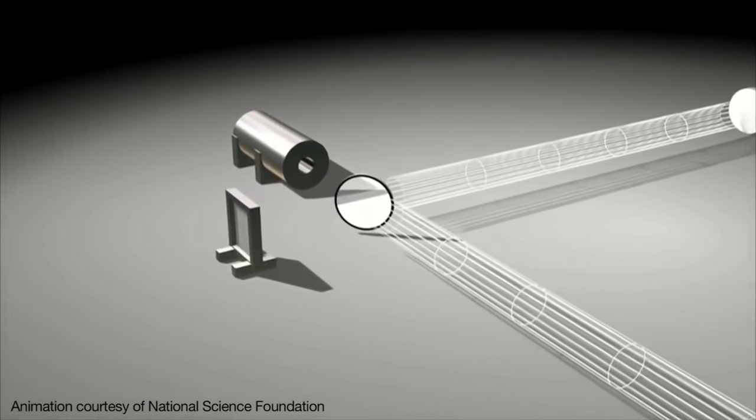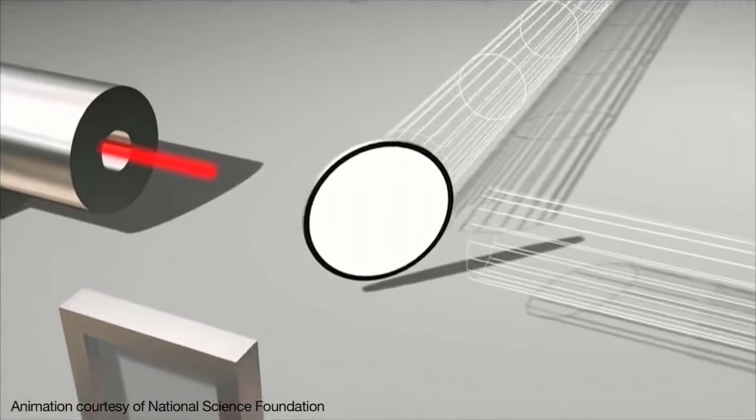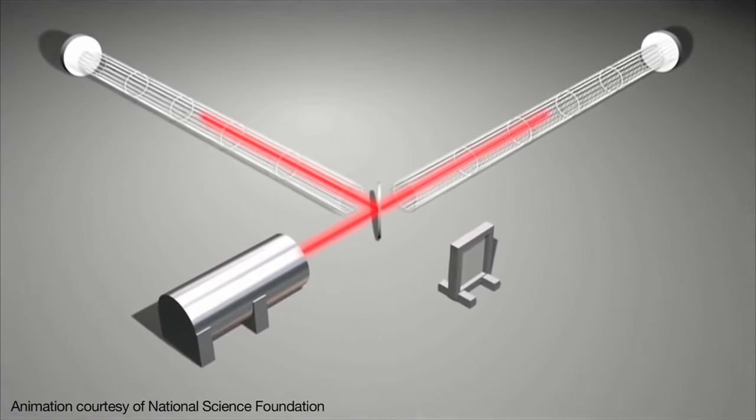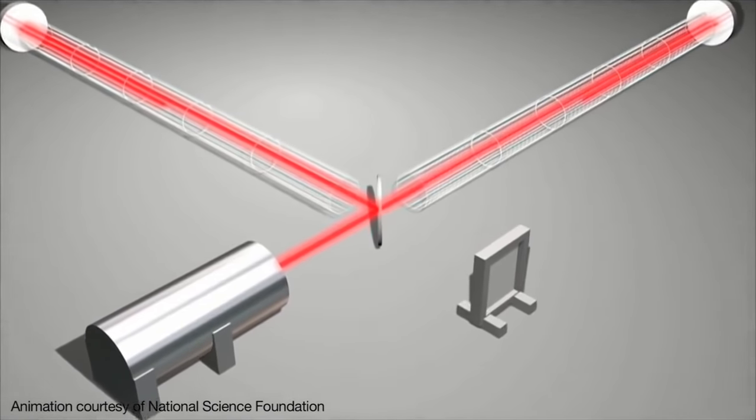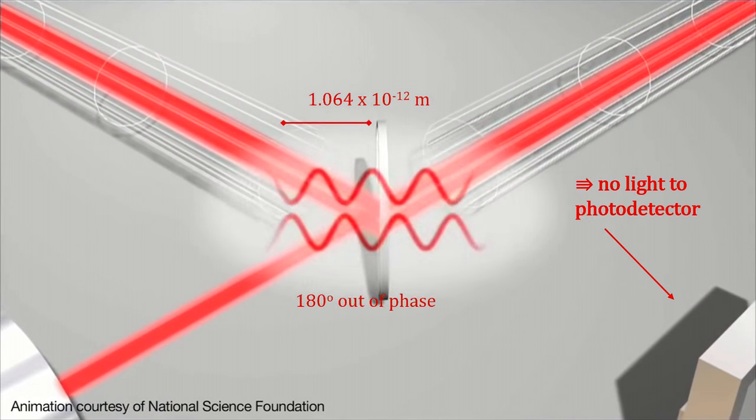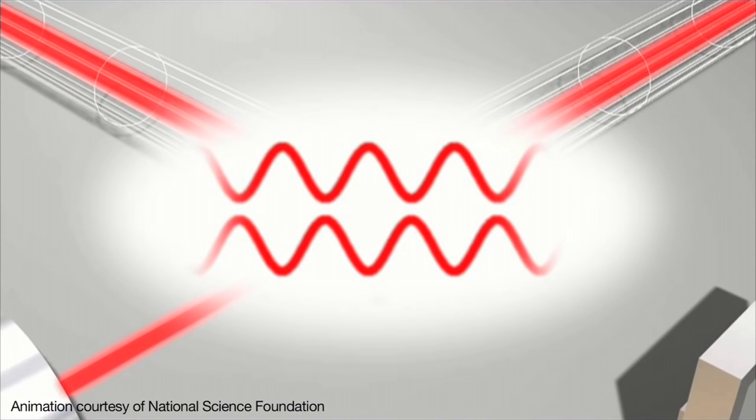The laser light is split and sent to the two mirrors. On return, they are recombined and sent to the photodetector. The beams returning from the two arms are kept out of phase so that when the arms are both in sync, as when there is no gravitational wave passing through, their light waves subtract and no light arrives at the photodetector.